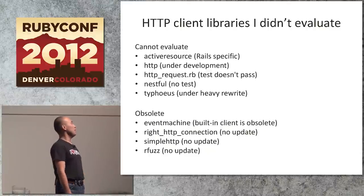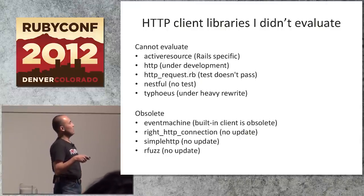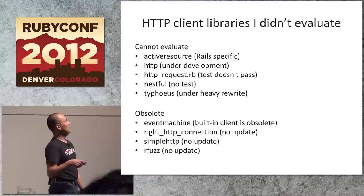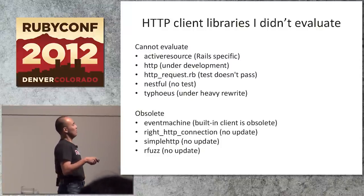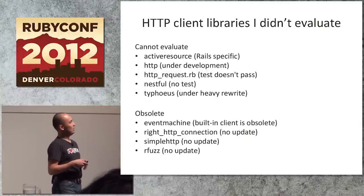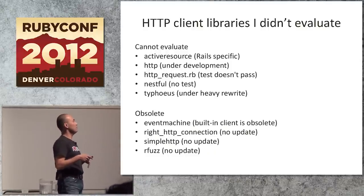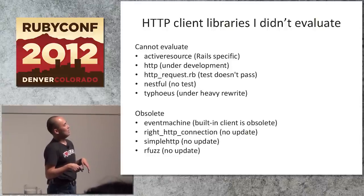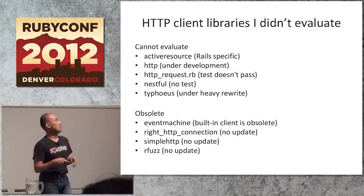There are many HTTP client libraries I didn't evaluate. Libraries I couldn't evaluate include: ActiveResource, which is Rails-specific; HTTP, which is under development; HTTPRequest.rb, whose tests don't pass; NEST, which has no tests; and Typhus, a CURL wrapper that is under heavy rewriting. I also didn't evaluate several other gems because they aren't updated recently — I think those libraries are obsolete.